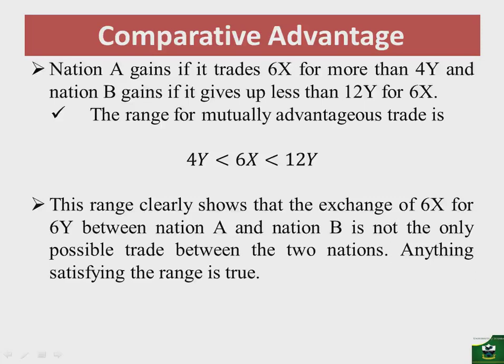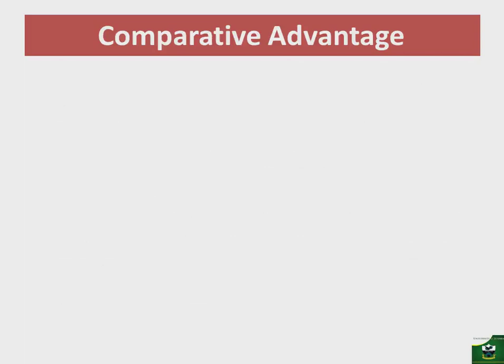The more Y nation A gets, the better it becomes. If the exchange falls to 4Y, then nation A will gain nothing. Clearly, the total gains from trade will be 8 — that is the upper boundary minus the lower boundary: 12 minus 4, defining the mutually beneficial range.